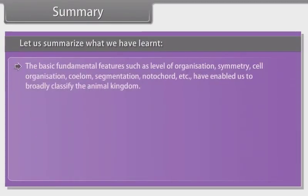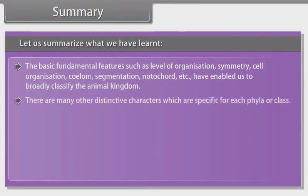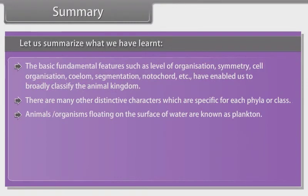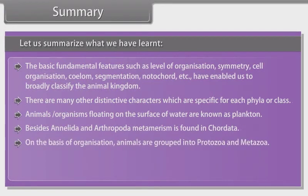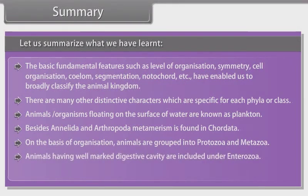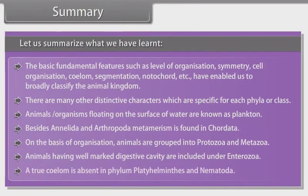Let us summarize what we have learnt. The basic fundamental features such as level of organization, symmetry, cell organization, coelom, segmentation, notochord, etc., have enabled us to broadly classify the animal kingdom. There are many other distinctive characters specific to each phylum or class. Animals or organisms floating on the surface of water are known as plankton. Besides Annelida and Arthropoda, metamerism is found in Chordata. On the basis of organization, animals are grouped into protozoa and metazoa. Animals having a well-marked digestive cavity are included under Enterozoa. A true coelom is absent in phylum Platyhelminthes and Nematoda.